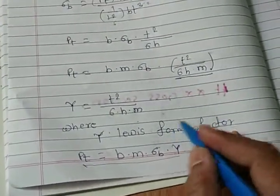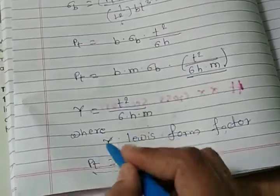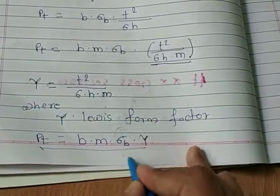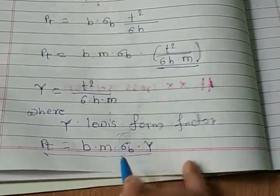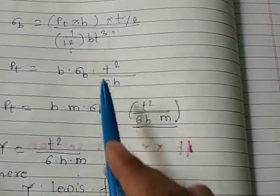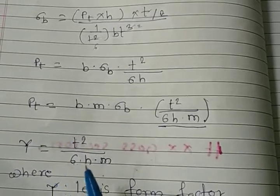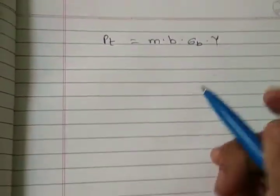Now, when material is same for both gear and pinion, then pinion is always weaker because this sigma b Y for pinion is less when the material is same. And as you can see, this Lewis form factor for pinion is always less as compared to the gear.